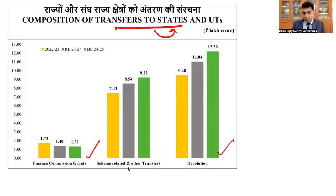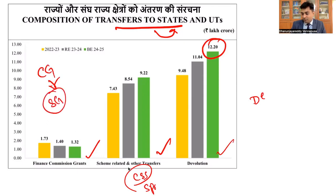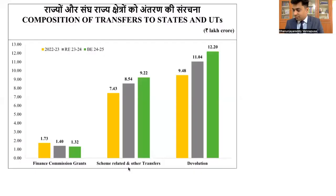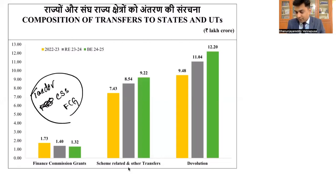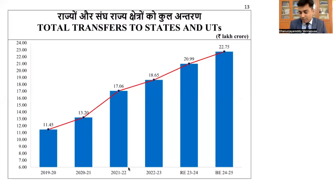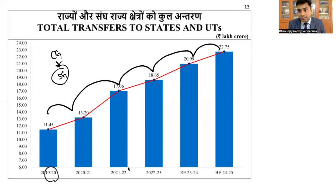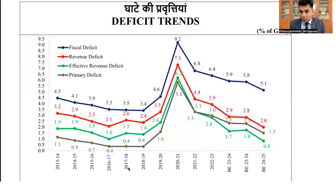Every year the central government transfers funds to states: tax devolution is highest, followed by centrally sponsored schemes, followed by finance commission grants. From 2020, there has been consistent increase in transfers from the central government to states. Some state governments say that Prime Minister Narendra Modi is not acting in favor of states, but the data shows government is definitely increasing the share of transfers to states.